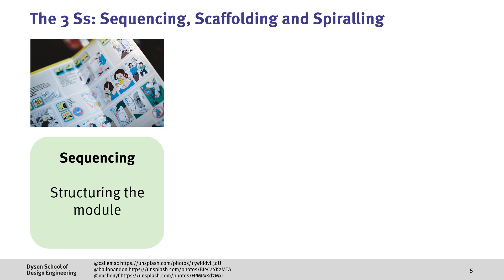Once you know what overarching style you want, the next step is to create a structure. Here, a useful framework is the three S's: Sequencing, Scaffolding and Spiralling. When sequencing, you're laying out the content in a structured order.